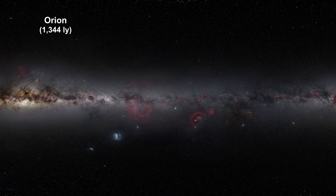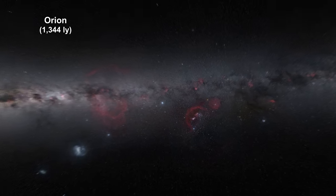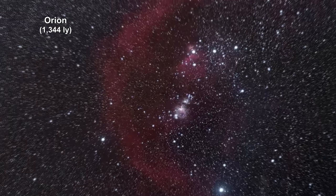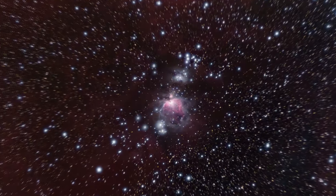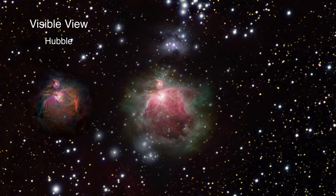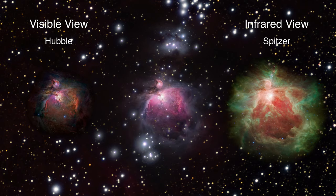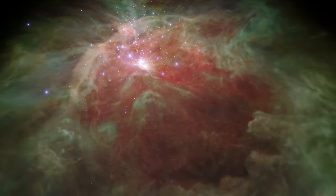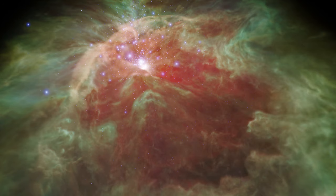This visualization explores the Orion Nebula using both visible and infrared light. The sequence begins with a wide field view of the sky showing the plane of our Milky Way galaxy, then zooms down into the scale of the Orion Nebula. The visible light observations from the Hubble Space Telescope and the infrared light observations from the Spitzer Space Telescope are compared first in two-dimensional images and then in three-dimensional models. As the camera flies into the star-forming region, the sequence crossfades back and forth between the visible and infrared views.